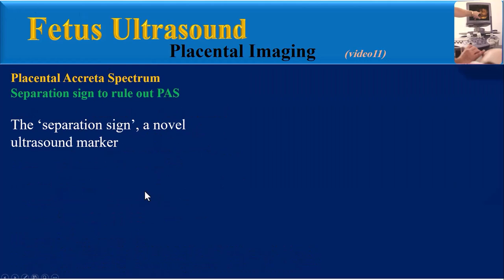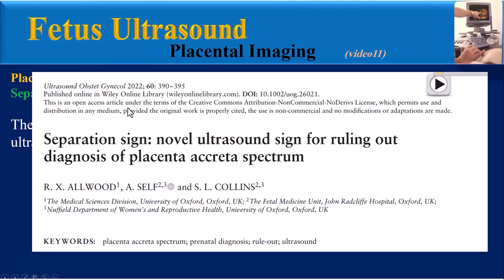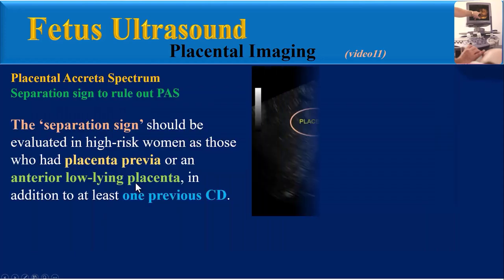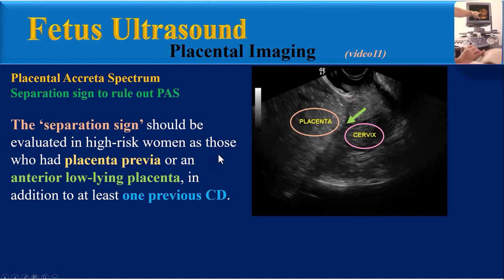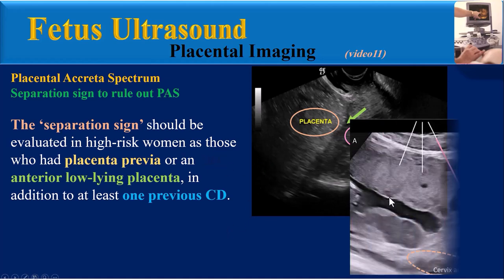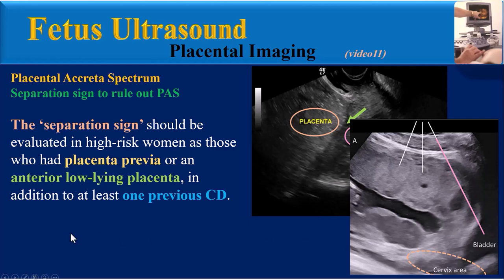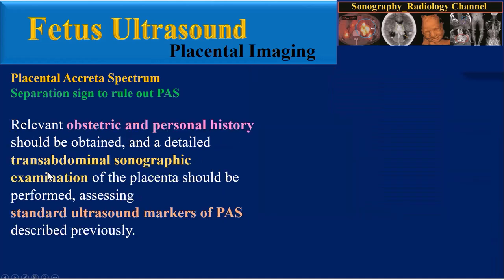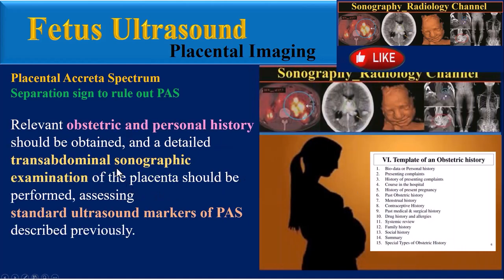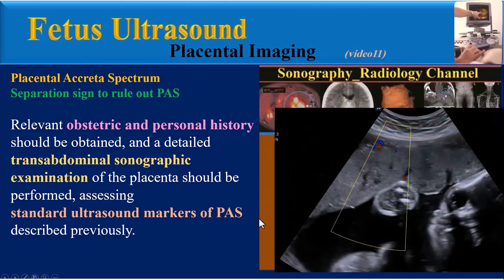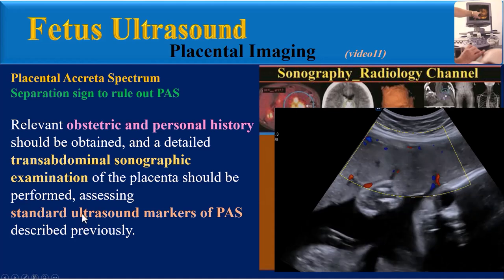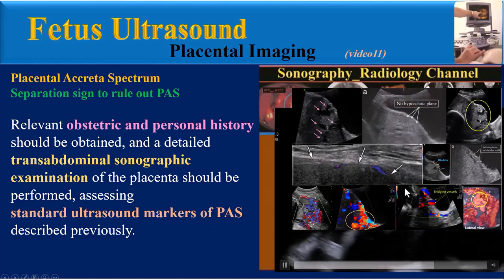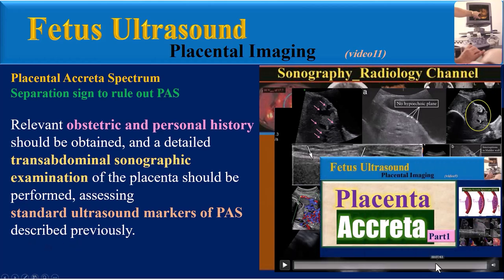The separation sign is a novel ultrasound marker. This paper, published in 2022, showed that the separation sign is a novel ultrasound sign for ruling out the diagnosis of Placenta Accreta Spectrum. The separation sign should be evaluated in high-risk women — those who have placenta previa or an anterior low-lying placenta, in addition to at least one previous caesarean delivery. Relevant obstetric and personal history should be obtained, and a detailed transabdominal sonographic examination of the placenta should be performed, assessing standard ultrasound markers of PAS as described in video Part 1.